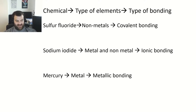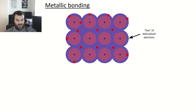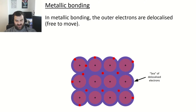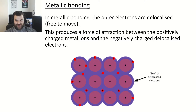Looking at metallic bonding in more detail, you'll have a diagram that looks like this. The key feature is that the outer electrons are delocalized — they are free to move, sometimes described as a sea of delocalized electrons. There is an attraction between the positively charged metal ions and those negatively charged delocalized electrons, and that's what holds them together.